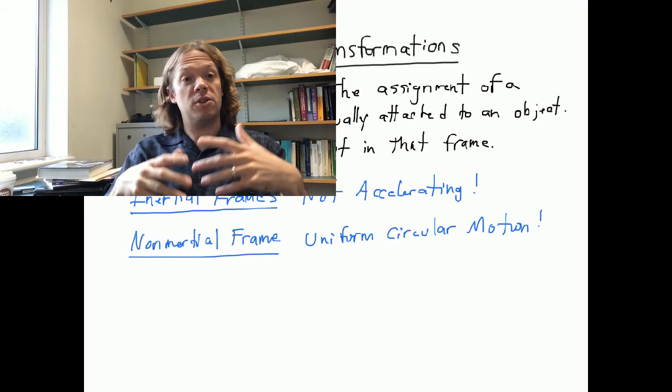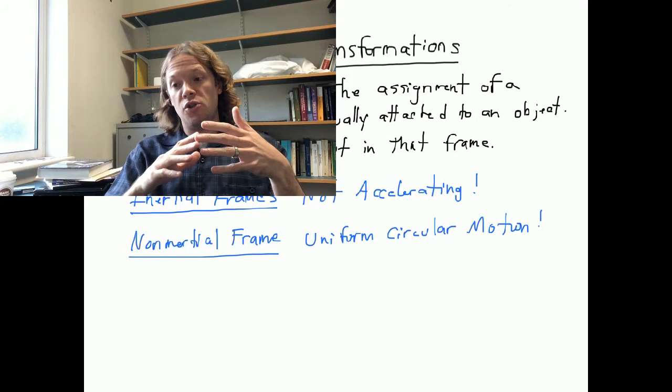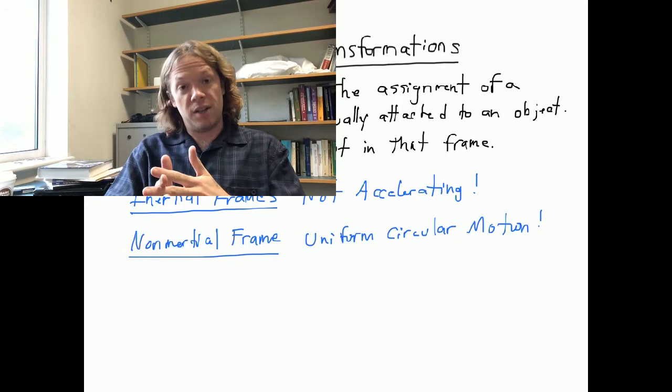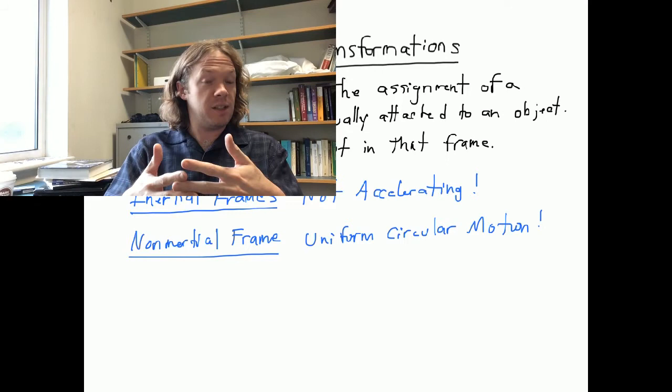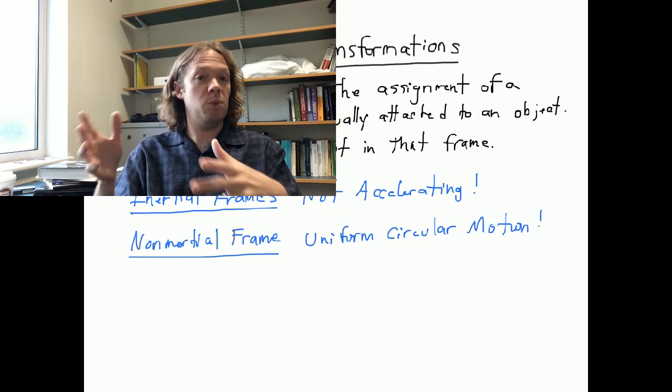These are called fictitious forces and we don't usually want to deal with them. In relativity, inertial frames are part of the postulates. Non-inertial frames are not part of the postulates, so we have to stay in an inertial frame if we're going to use the special relativity we've been learning. That's why we're only going to talk about inertial frames, and now it becomes very important to differentiate between the two.